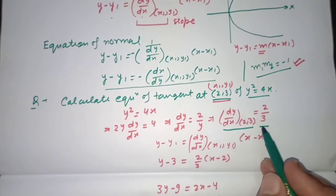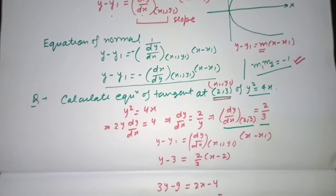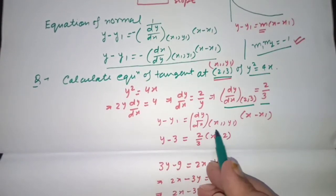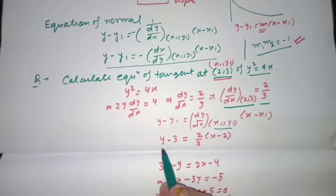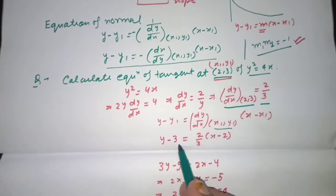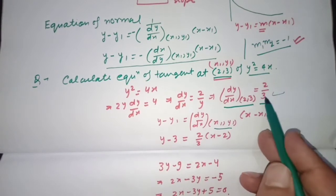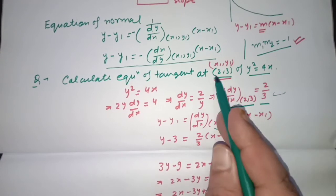At point (2, 3), dy/dx = 2/3. Now applying the equation of tangent: y − y1 = (dy/dx) at the given point × (x − x1). Substituting x1 = 2, y1 = 3, and slope = 2/3, we get: y − 3 = (2/3)(x − 2).